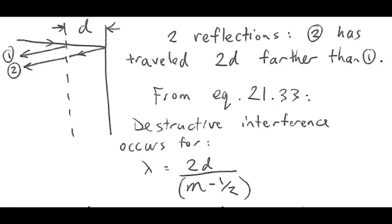Okay, so I've drawn a little bit of an angle there, but imagine that there's no angle, and that it has normal incidence, meaning it's coming at 90 degrees. You can see it's traveling 2d further.